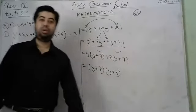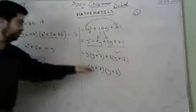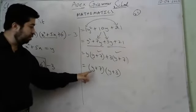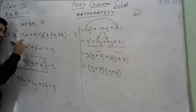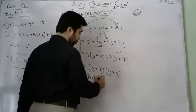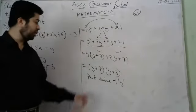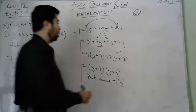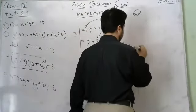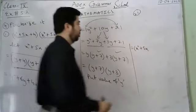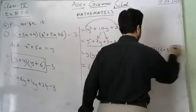But this is not the final answer because our original variable was x, not y. We substitute back y equals x² plus 5x to get the answer: (x² plus 5x plus 7)(x² plus 5x plus 3).